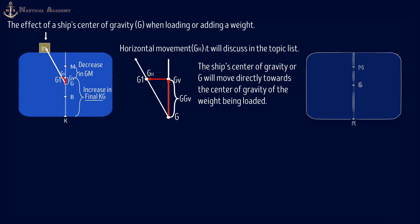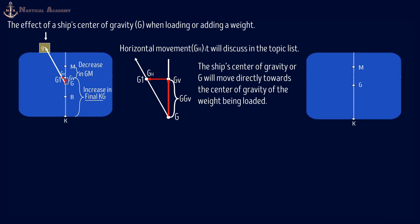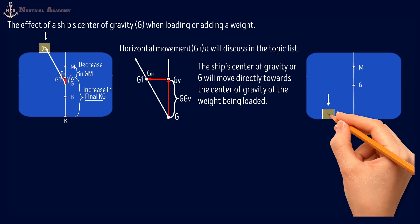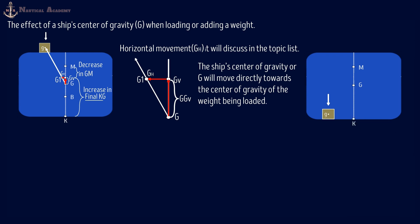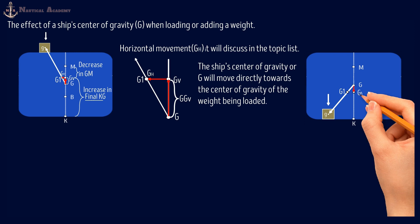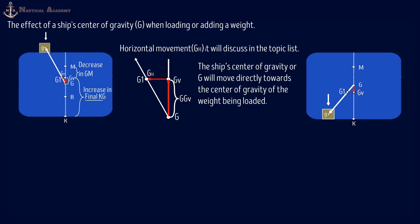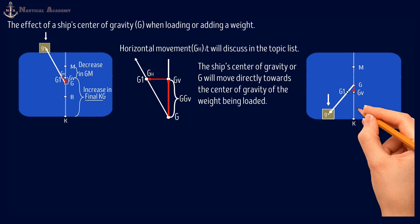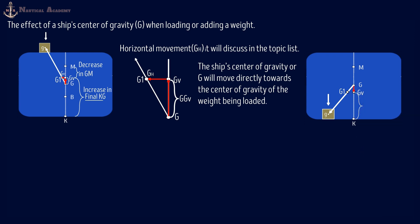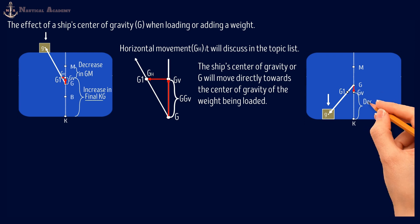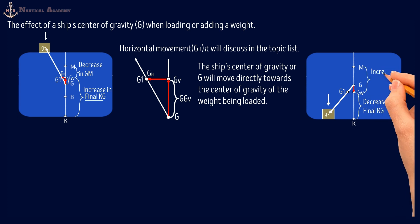The next scenario is the loading of a weight in the lower hold. The ship's center of gravity moves directly towards the center of gravity of the weight being loaded, marked as small g. The new G is marked G1 after loading, and the vertical shift of G is marked Gv. The horizontal movement of G is not our concern here since we are dealing with the vertical movement or KG. So in this case, the effect will be a decrease in final KG and an increase in the initial metacentric height GM.